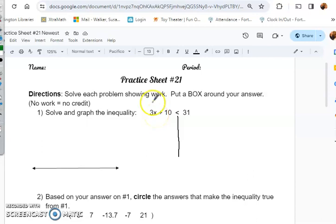In number one, we still want to get that variable by itself, so I need to get rid of plus ten and times three. We always start with the easier steps, so we're going to do minus ten and minus ten to the other side. We do the same thing to both sides. This crosses out and I'm left with 3x.